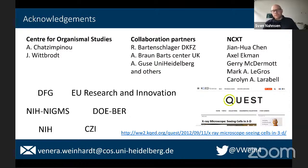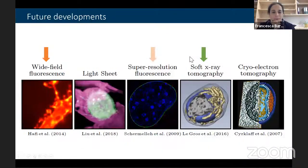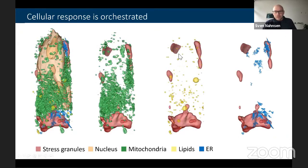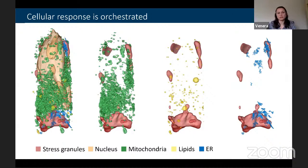A question about data volume: the sensor is 1024 by 1024 pixels. Rather than conventional filtered back projection — which would require acquiring 1500 images — the group uses their own iterative reconstruction algorithms, which require only 90 images for a complete 3D dataset. All the cell reconstructions shown were done with only 90 images per cell per volume, a very small number.